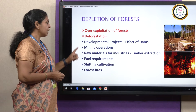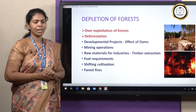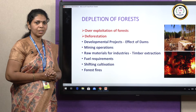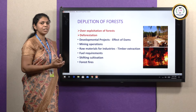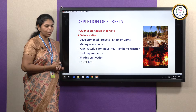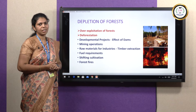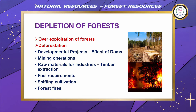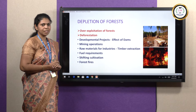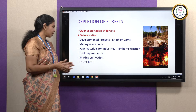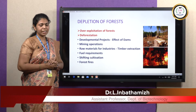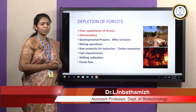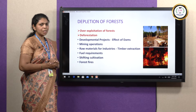Deforestation — a very sad part. Development of projects: we are getting civilized and moving into urbanization, but on the same hand, we are trying to destroy the forest and converting these areas for developmental projects like the construction of dams and industries. Mining operations — for mining to extract minerals, we move into the forest and remove the trees. Forests are the raw materials for industries, especially timber extraction. Though it has been proved illegal at times, people are extracting timber, rosewood, and sandalwood for commercial purposes.